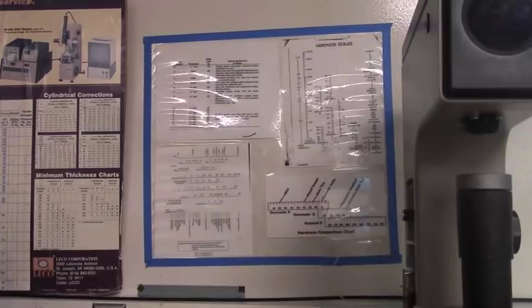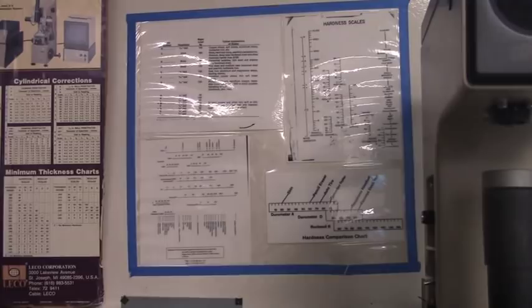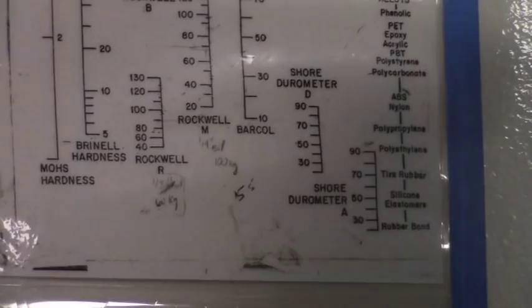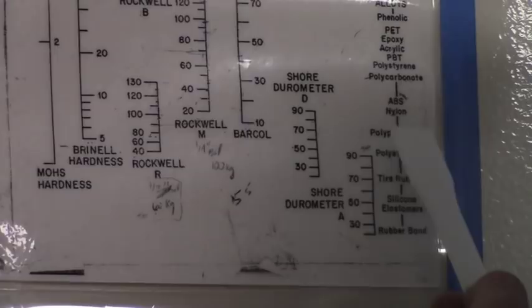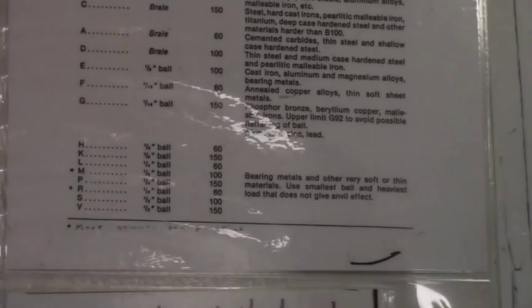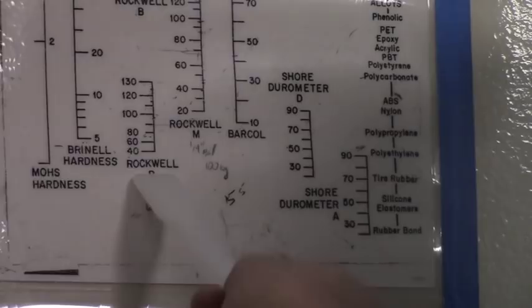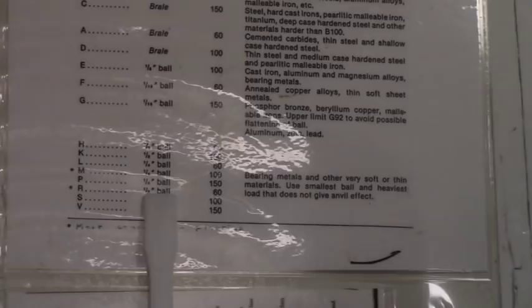A chart is located behind the hardness tester. Use this to decide on the correct scale. The scales are denoted by a single letter, which determines the load and the indenter that will be used. The R scale is appropriate for most plastics. For extra precision, a blue binder beside the hardness tester has a table of the appropriate scale for specific polymers.